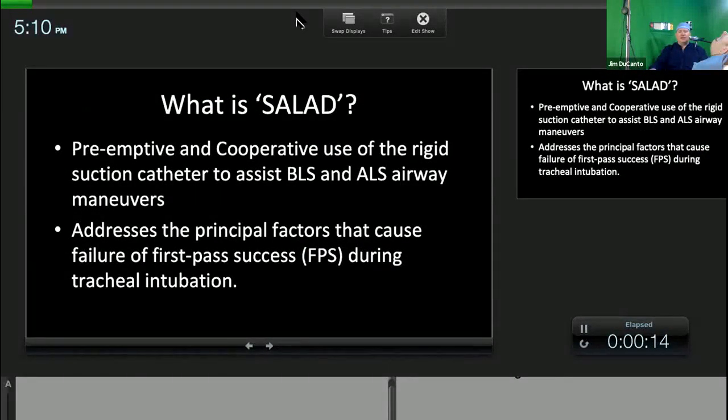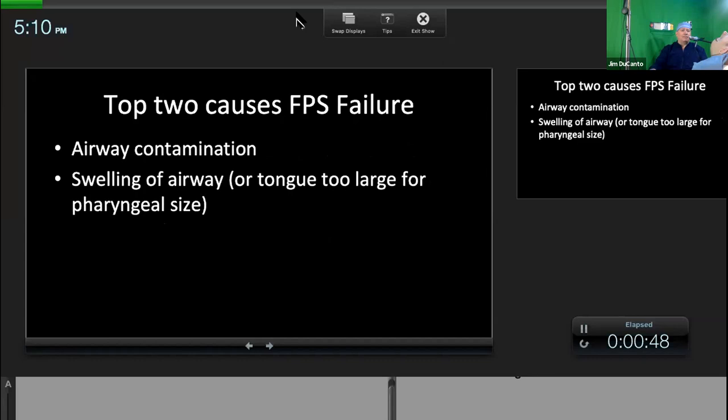So what is SALAD? It's when we're using the suction catheter preemptively. We're using it preemptively instead of simply waiting to see if we need to suction. We also physically use the suction as a tool to help you do the laryngoscopy or help you put in the supraglottic airway. This is addressing some factors that I believe cause failure of first pass success during tracheal intubation or supraglottic airway insertion.